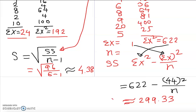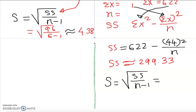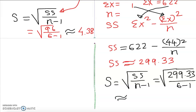With SS = 299.33 for the second data set, we plug into the formula: s = √(299.33 / (6 − 1)) = √(299.33 / 5), which gives approximately 7.74. Notice that similar to the range, the standard deviation of the second data set is almost double that of the first — 4.38 versus 7.74 — meaning it is spread further from the mean.